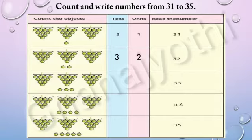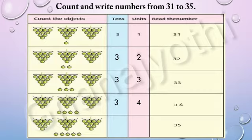Now, let us write the number 33 in its place value. Look at the fourth row — in the fourth row, there are 34 grapes. Let us write the number 34 in its place value. Now, look at the fifth row — in the fifth row, there are 35 grapes. Let us write the number 35 in its place value: 5 in the units place and 3 in the tens place.